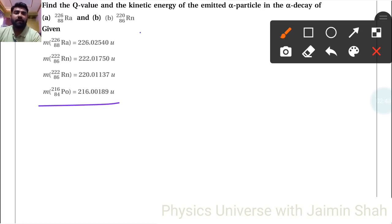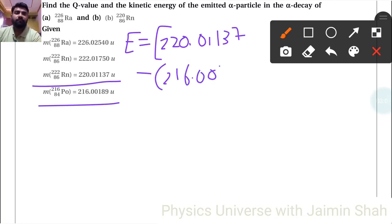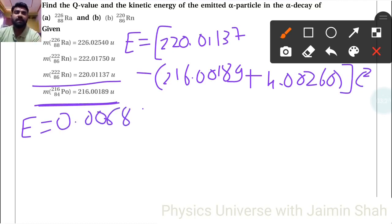Again using the energy formula delta M times C squared: 220.01137 minus 216.00189 plus 4.00260, all times C squared. This equals 0.00688 times 931.5 MeV, which is 641 MeV.